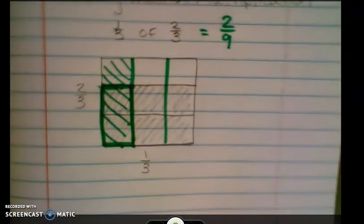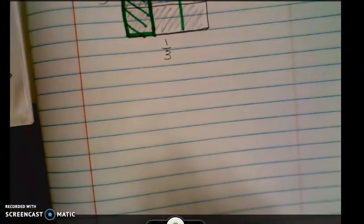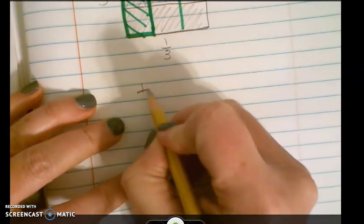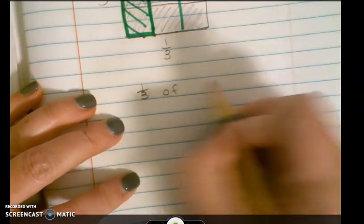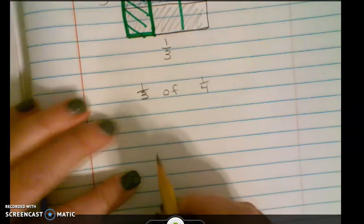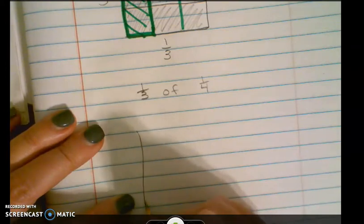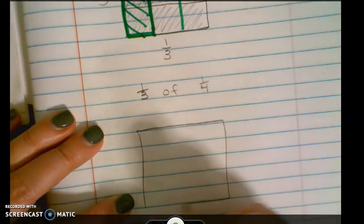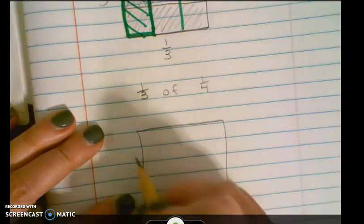So I'm going to scoot my paper up, give me some more room to draw. I want to know what is one-third of one-fourth. Again we're going to model our brownie pan. I'm going to start off with my second fraction.